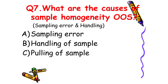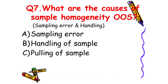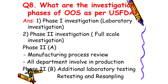Next: What are the causes of sample homogeneity OOS? The answer is: sample homogeneity OOS happens due to sampling error, due to the handling of the sample, and due to the pooling of the sample.